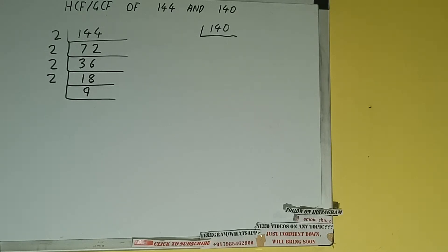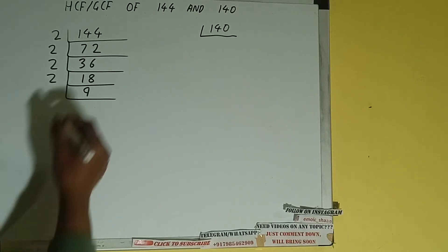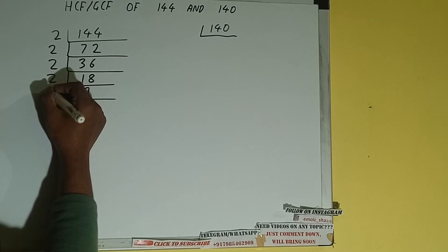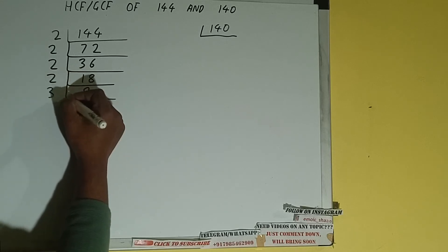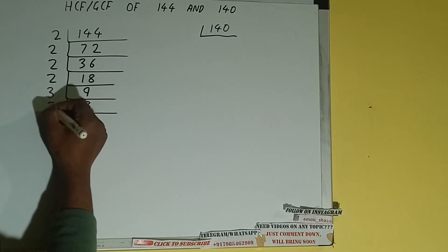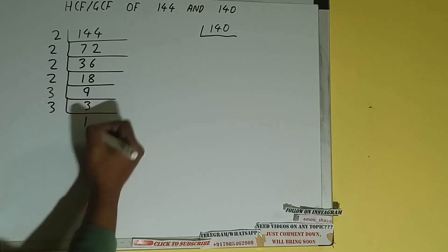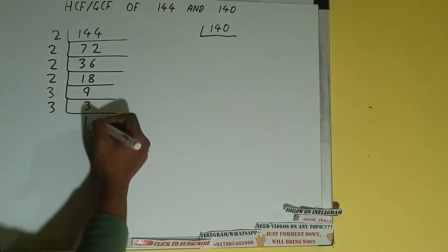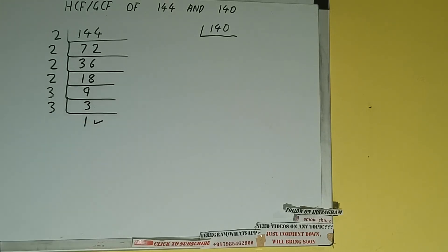So we'll check with the next lowest prime number, that is 3. Is 9 divisible by 3? Yes it is. So we divide it and we'll get 3. 3 is again divisible by 3, and we'll get 1. Once we get 1, we are done with 144. Now we need to do the same with the number 140.